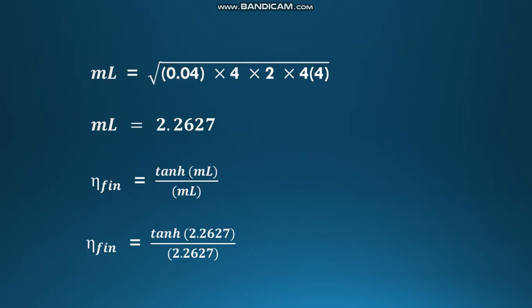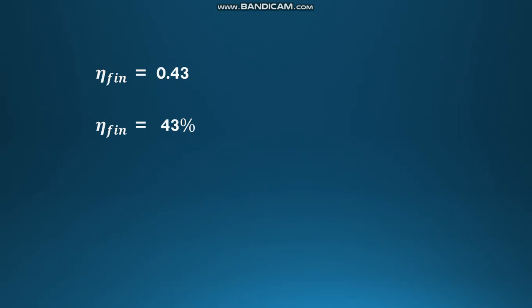Already Biot number hr/k is 0.04. Substituting that and evaluating, and again calculating efficiency of fin by using the expression tanh(mL)/mL, we can calculate this efficiency of the fin. In this way, we can calculate and solve the problems given in GATE question paper.